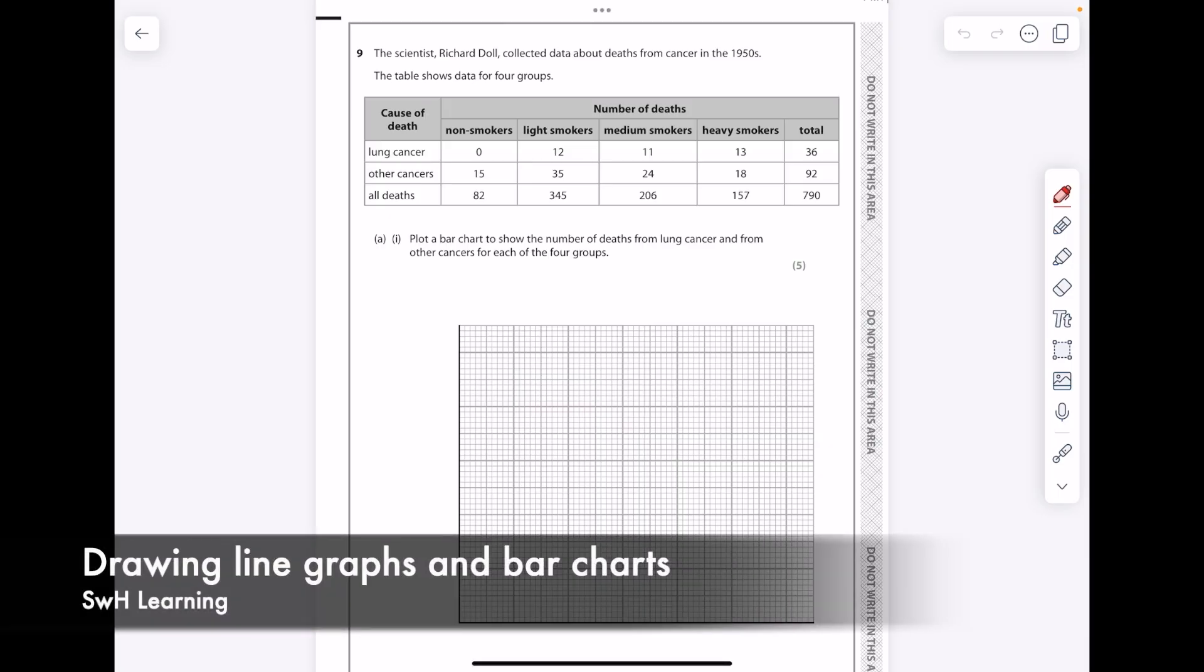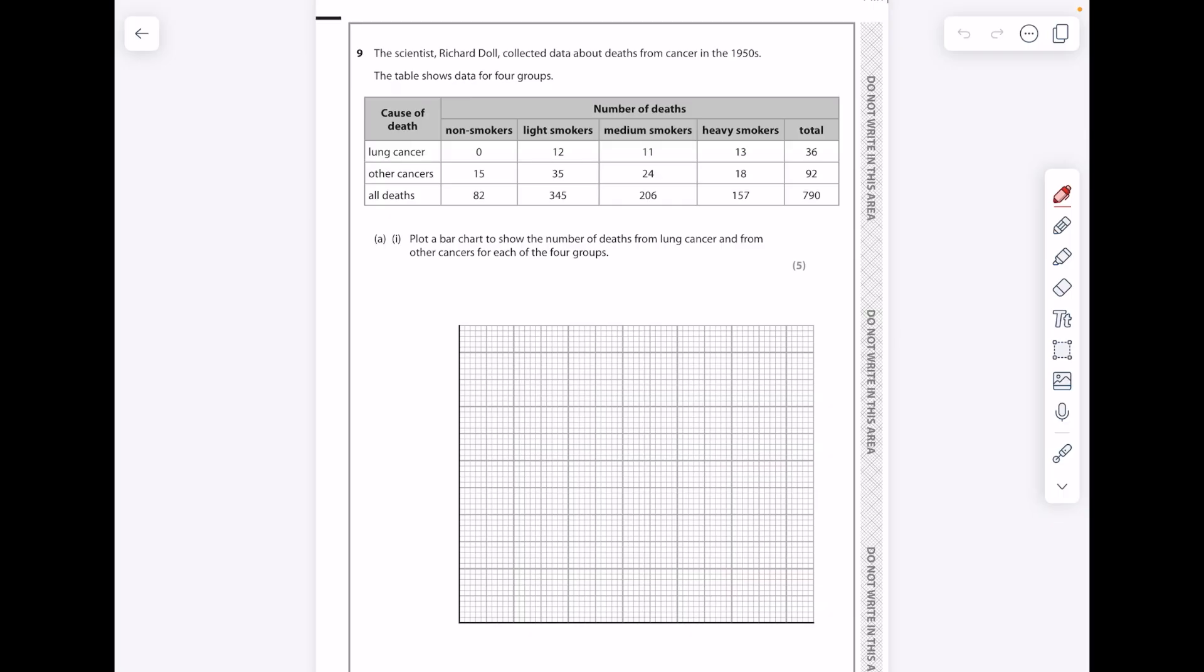I'm going to talk you through some top tips for drawing graphs and we're going to start with what I think is one of the most difficult graph types. The scientist Richard Dole collected data about deaths from cancer in the 1950s. The table shows data for four groups.